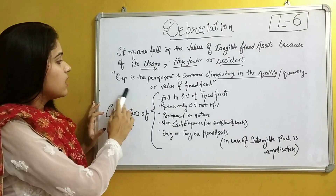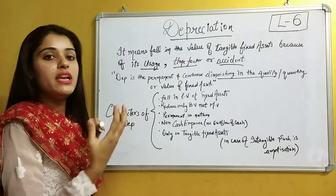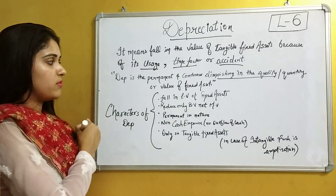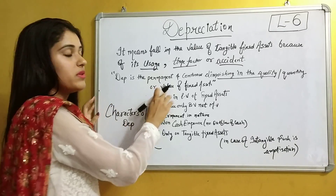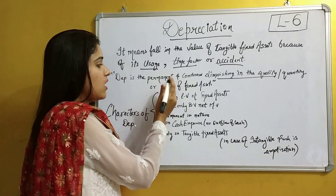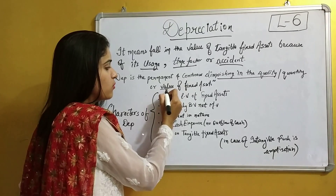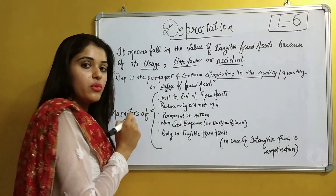Next is the value of the fixed asset. Value here basically means the book value. We can also say that value is the book value of the asset.